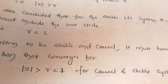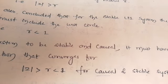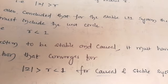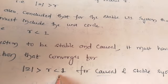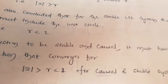Alternatively, for a system to be both stable and causal, all the poles should lie inside the unit circle in the Z-plane. This concludes the discussion on causality and stability of the Z-transform.